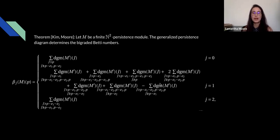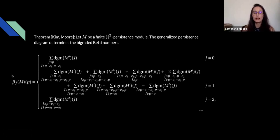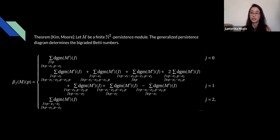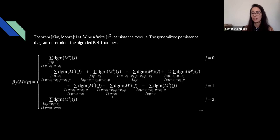Now the main theorem, joint work with Woojin Kim: there is a formula for calculating the bi-graded Betti numbers from the generalized persistence diagram. This formula is admittedly messy and not computationally quick, but it gives us two things: further motivation for computing the generalized persistence diagram efficiently, since it recovers yet another important invariant; and a really nice visual interpretation.